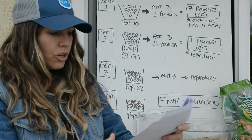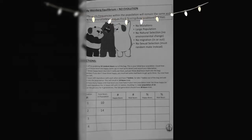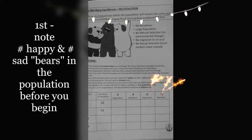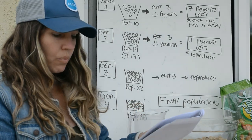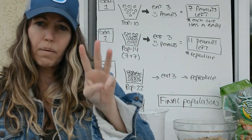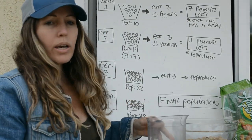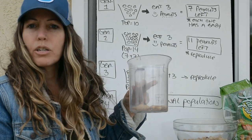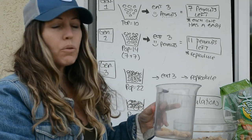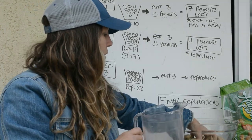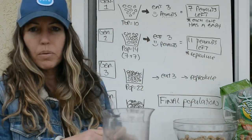On the second page of your lab, note how many happy bears and how many sad bears you have in your entire population, then eat three happy bears. Once you eat the three, you have a population of seven left. Each of these bears or peanuts will reproduce one baby at a time, so you're going to grab seven babies and stick them back in the population.